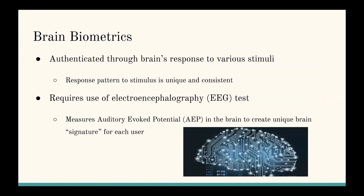Brain biometrics are much more secure than these previous biometric systems because they utilize the unique and consistent brain waves of an individual to authenticate themselves into a system. Every person's reaction to a stimulus is unique and consistent. The way brain waves are measured is through electroencephalography — EEG tests — which measure the voltage of your brain waves, and that's recorded on system software on a computer. That's how you can track your brain waves and your response to different stimuli to create a unique authentication for an individual.